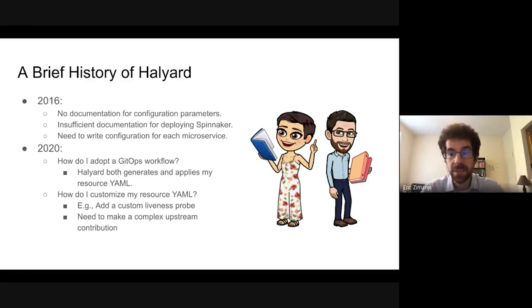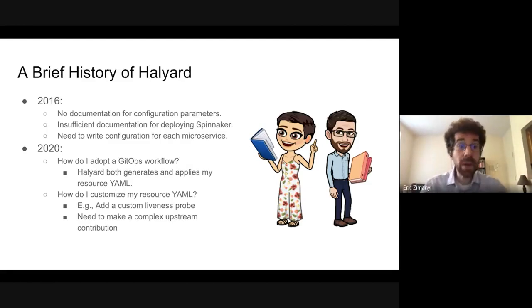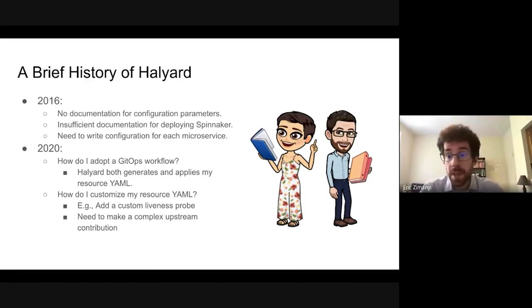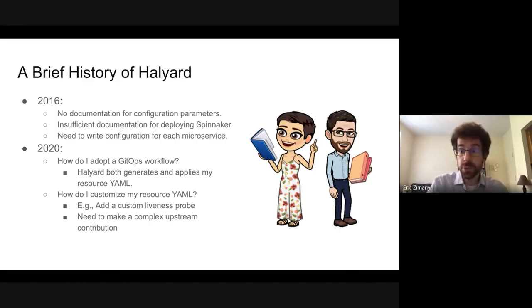In the case of deploying to Kubernetes it was actually even more difficult than that. You had to start writing services and deployments for each microservice, and then on top of that write the config files for each microservice. What Halyard did was solve a lot of those problems for users. It created a new command line tool with pretty good documentation on all of the various things that you could configure, and Halyard actually deployed Spinnaker for you, either to virtual machines or to a Kubernetes cluster.